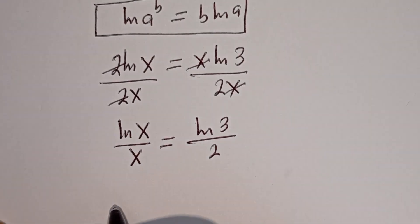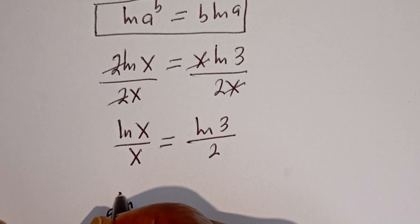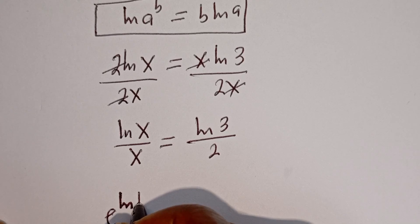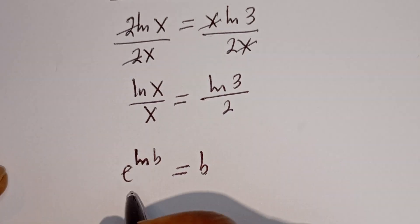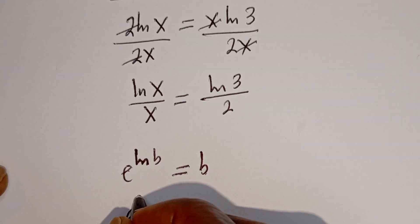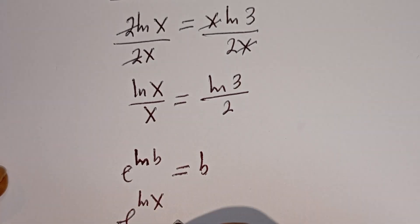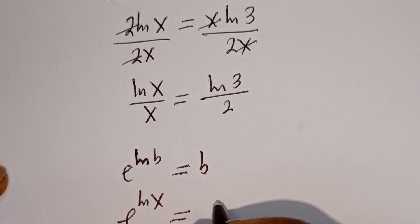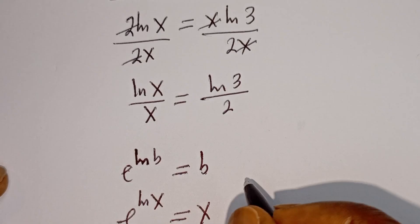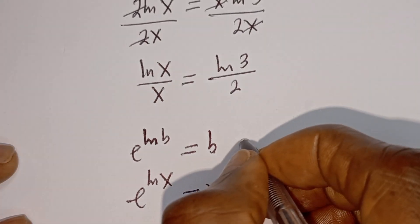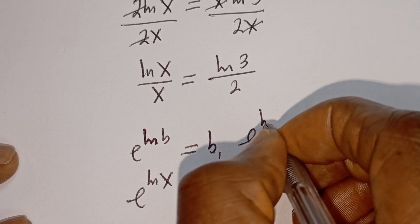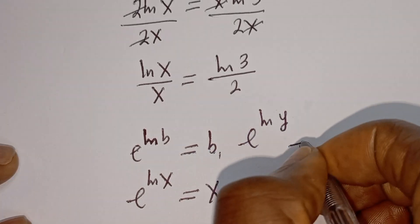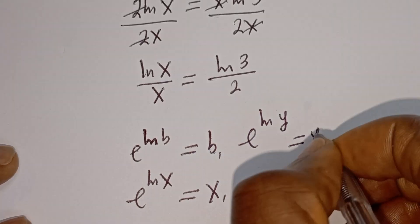Take note of this: if you have e to the power of ln of b, this is equal to b. Also, if you have e to the power of ln of x, this is equal to x. And if you have e to the power of ln of y, this is equal to y.